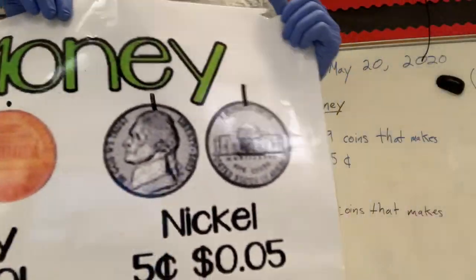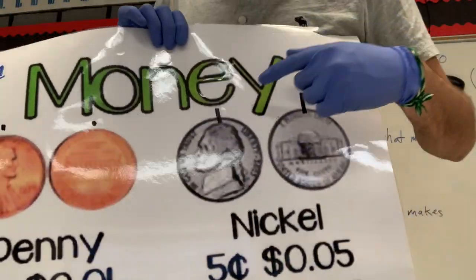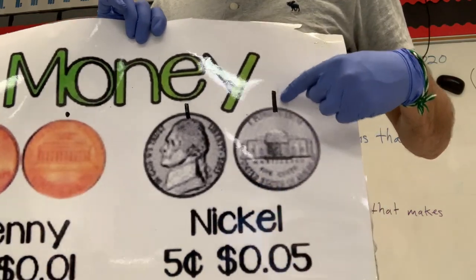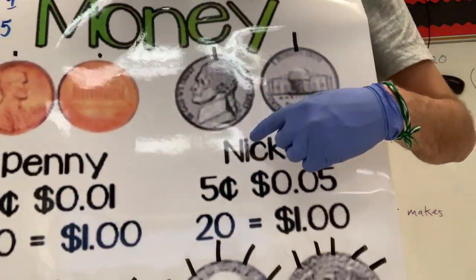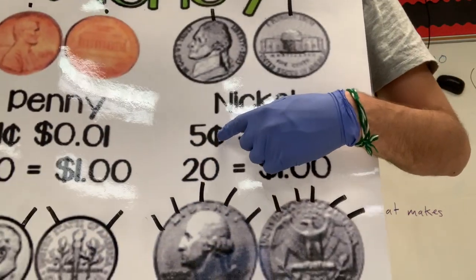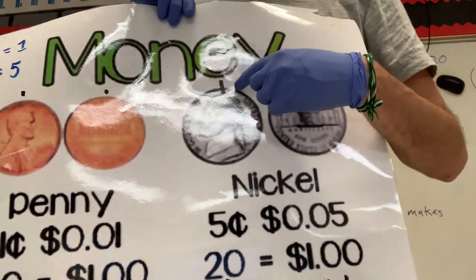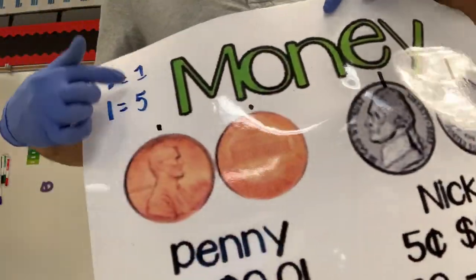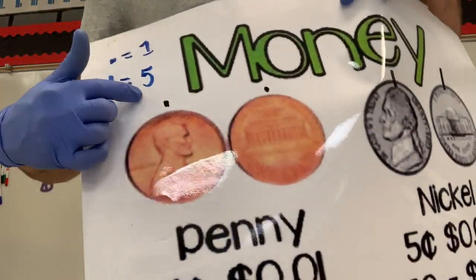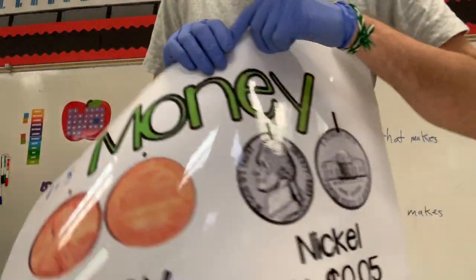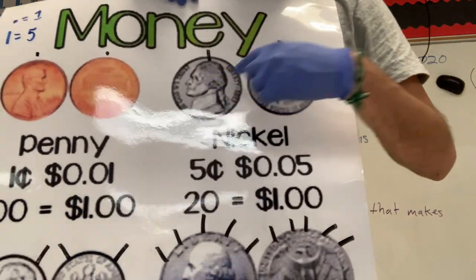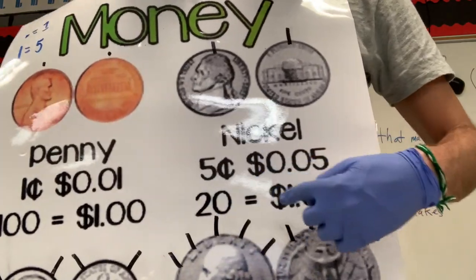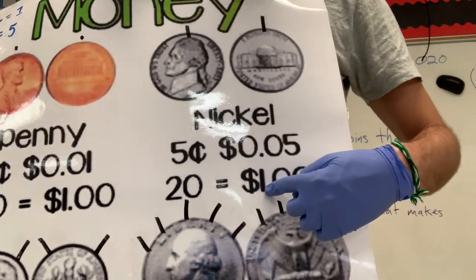The next one we have is the nickel. The nickel has only one hair — un solo pelito. The nickel is five cents. This is why it has one hair. Each hair, cada pelito, vale cinco centavos — is worth five cents. So the nickel is five cents, and twenty nickels make one dollar.